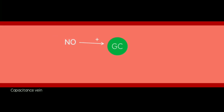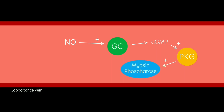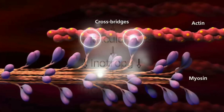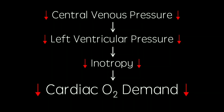Nitric oxide enters the capacitance vessels and activates guanylyl cyclase. This enzyme converts GTP to cyclic GMP, which activates protein kinase G, further activating myosin phosphatase. This enzyme dephosphorylates the regulatory light chains in myosin, preventing myosin from forming cross-bridges with actin in smooth muscle cells, thus causing vasodilation.